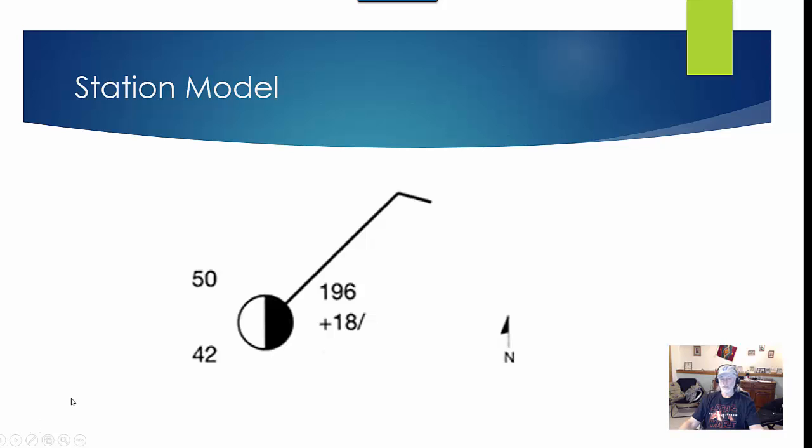Station model: You did several of these. You need to know cloud cover - this one's about 50%. Wind direction, and the staff always points into the wind, so this one's coming from the northeast. Air temperature, we're looking at 50 degrees here. Dew point 42.